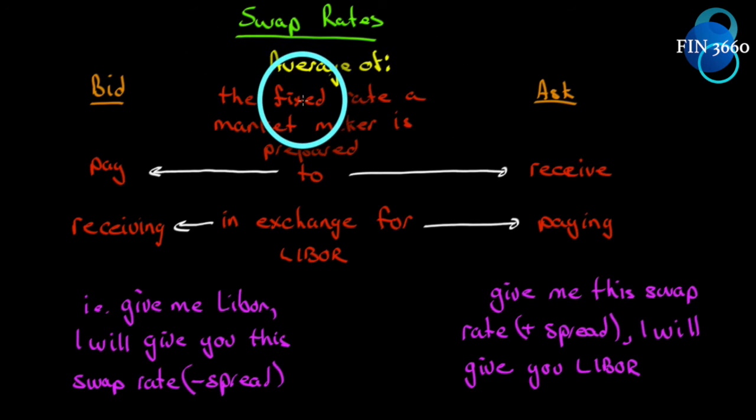This swap rate is a rate at which on day zero, the swap has zero value. So it is a fixed rate of interest that would equate the value of a floating rate bond with the value of a fixed rate bond on day one. Just be aware that's how the swap rate is stated. It's a fixed rate that a market maker is prepared to either pay or receive in exchange for LIBOR.